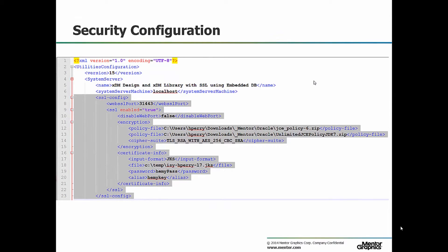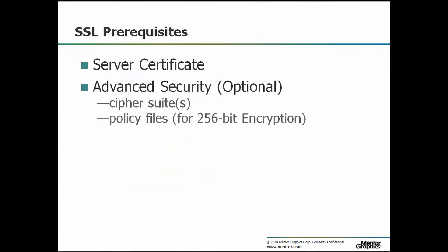To enable SSL, you should modify the SSL config tag under the system server tag in the input XML. Before I show you how to do that, you need to know the prerequisites for using SSL. You need to create or obtain the server certificate that will be used to identify the XDM host machine.